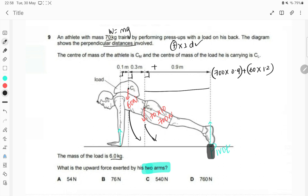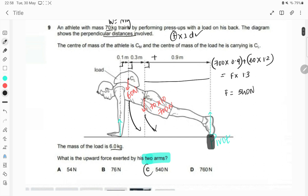This needs to be balanced by the moment due to the arms, which is some unknown force into total distance 0.9 plus 0.3 plus 0.1, which comes out to be 1.3. Solving this, you will get F as 540 Newton. So your answer has to be C.